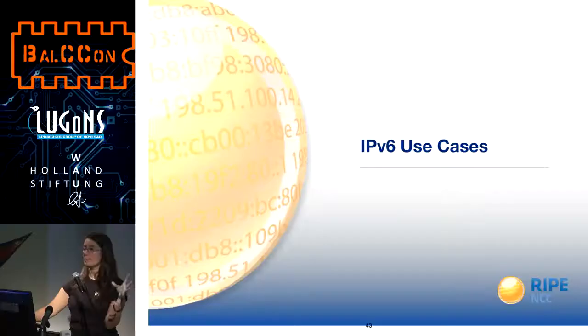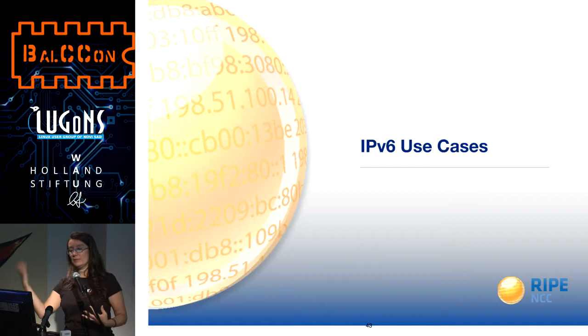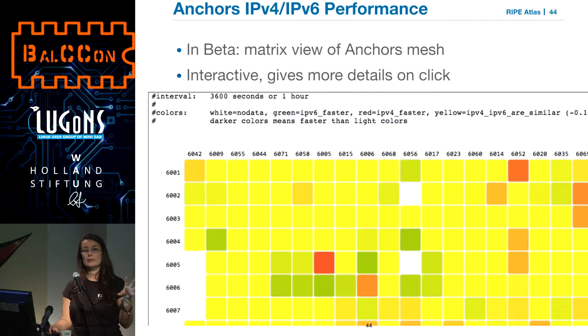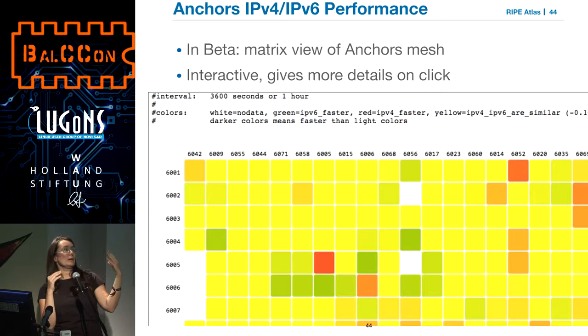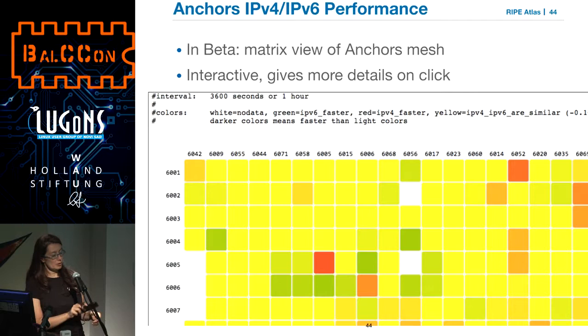How do you use RIPE Atlas for IPv6? There's a new visualization not yet deployed publicly but I wanted to show it because it's really nice — anchor hosts are looking forward to it. It's a comparison between the performance of anchor measurements over V4 and V6. It's a mesh of all the anchors, and the colors show what is faster: green means V6 is faster, red means V4 is faster, yellow means they are about the same. Once deployed, it will be interactive and show more details on mouse click.